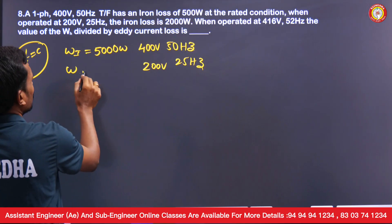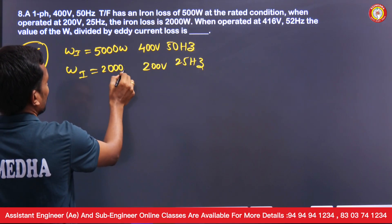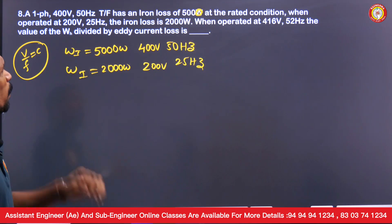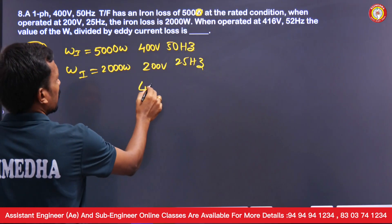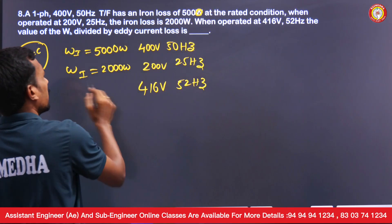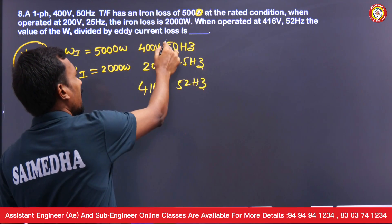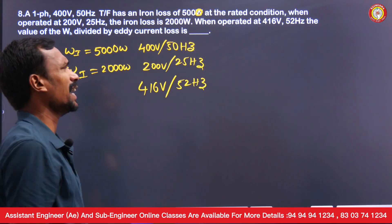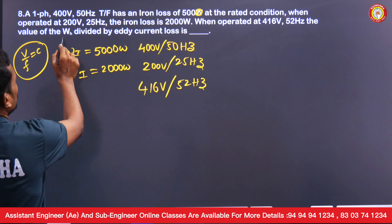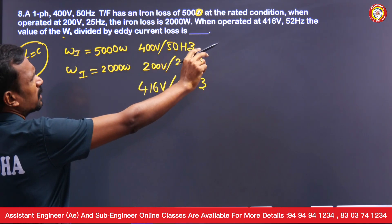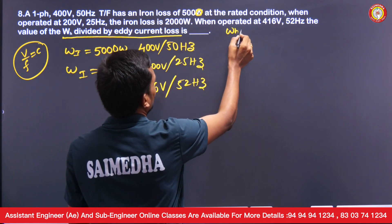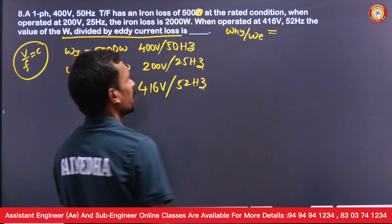When operated at 416 volts, 52 Hz, the V/f ratio remains constant (416/52 = 8, same as 400/50 = 8). We need to find the ratio of hysteresis losses to eddy current losses at 416V, 52 Hz.